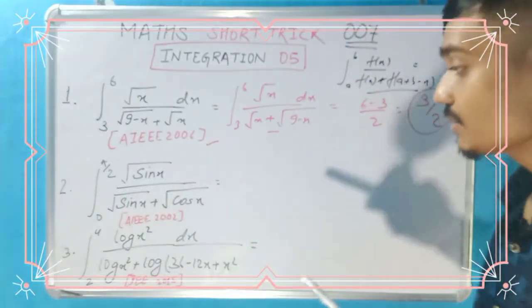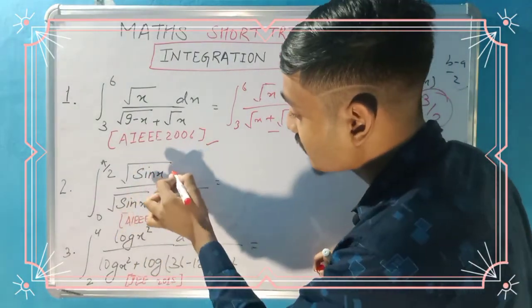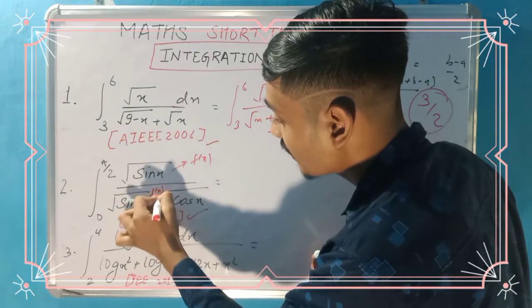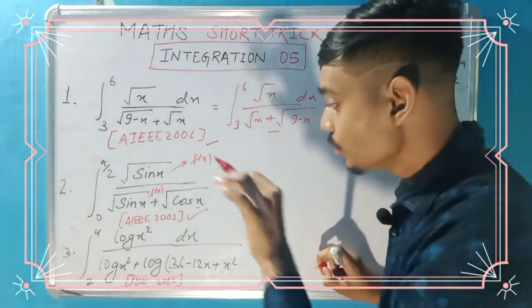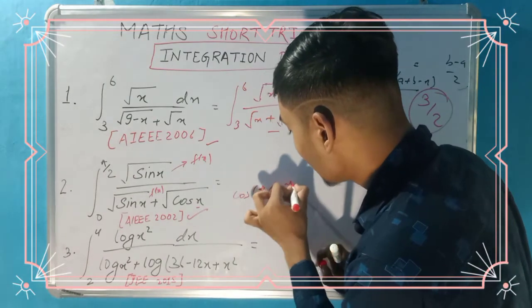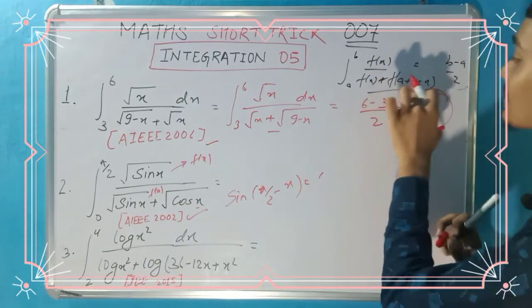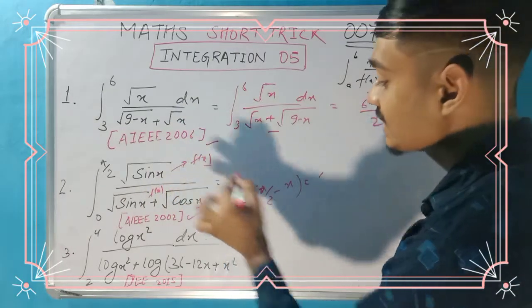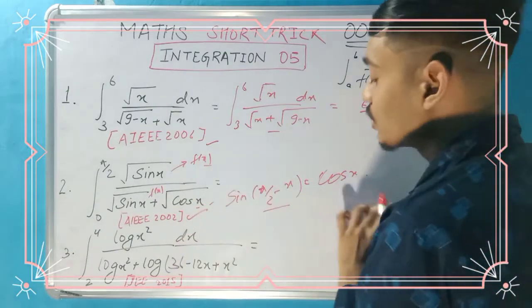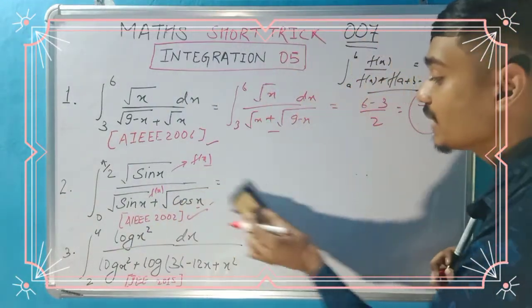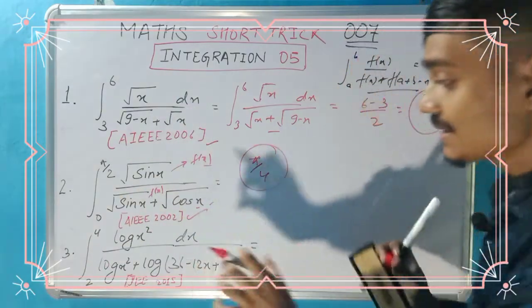The next question: integral 0 to π/2 of sin x divided by sin x plus cos x. Here we will consider sin x as f(x). So this will be our f(x), and here we have to write π/2 plus 0 minus x, so π/2 minus x. And sin(π/2 - x) is cos x. Cos x is here, so we can easily answer this: upper limit minus lower limit divided by 2. So π/4 is our required answer.